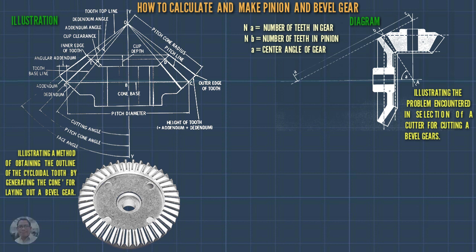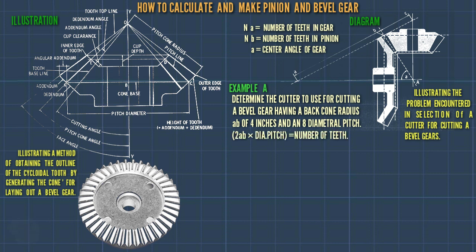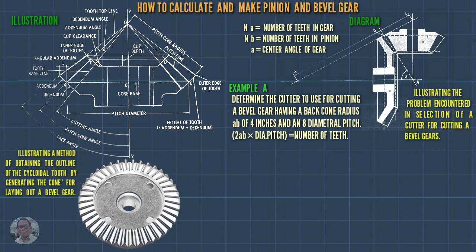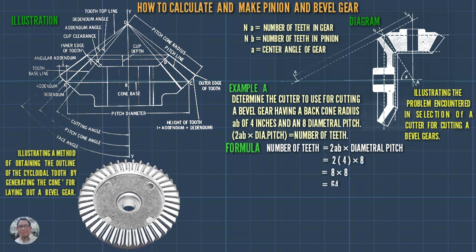We proceed to Example A: determine the cutter to use for cutting a bevel gear having a back cone radius of 4 inches and an 8 diametral pitch. The formula is: 2 times back cone radius times diametral pitch equals number of teeth. Substituting: number of teeth equals 2 times 4 times 8, which is 64.